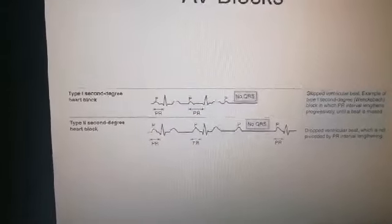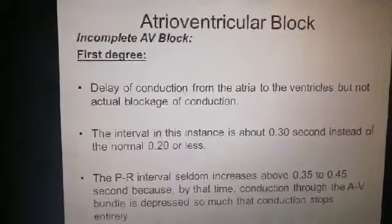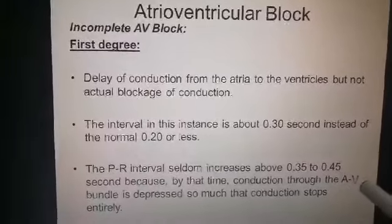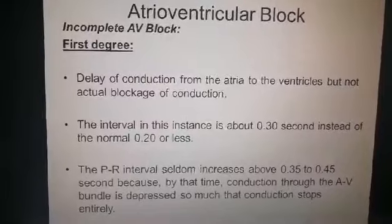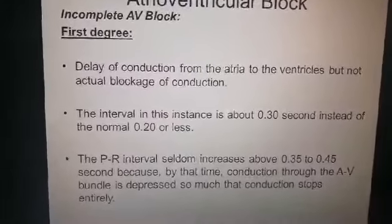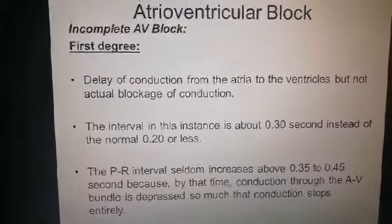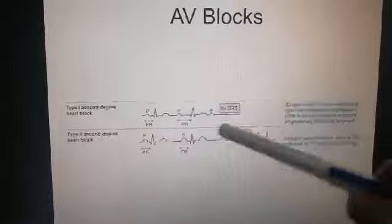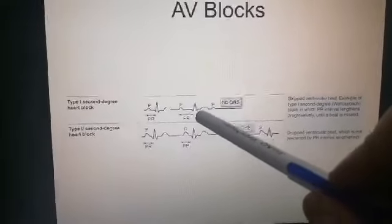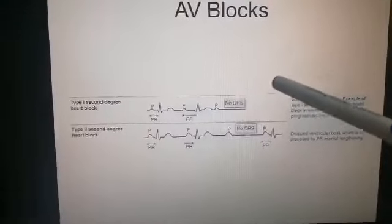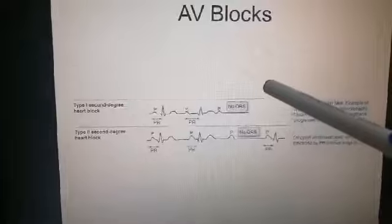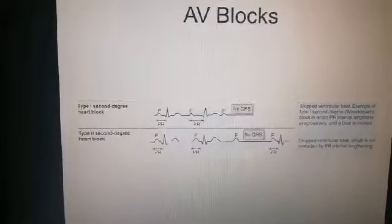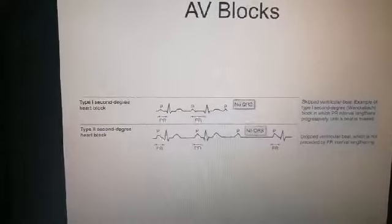As mentioned, when the PR interval seldom increases to 0.35 to 0.45 seconds, the conduction through the bundle is so depressed that it stops entirely — meaning there is a skipped ventricular beat. You can see this skipped ventricular beat here. When the PR interval prolongs and prolongs, a point is reached where a skipped ventricular beat occurs, because this is the level at which the PR interval cannot be further prolonged.